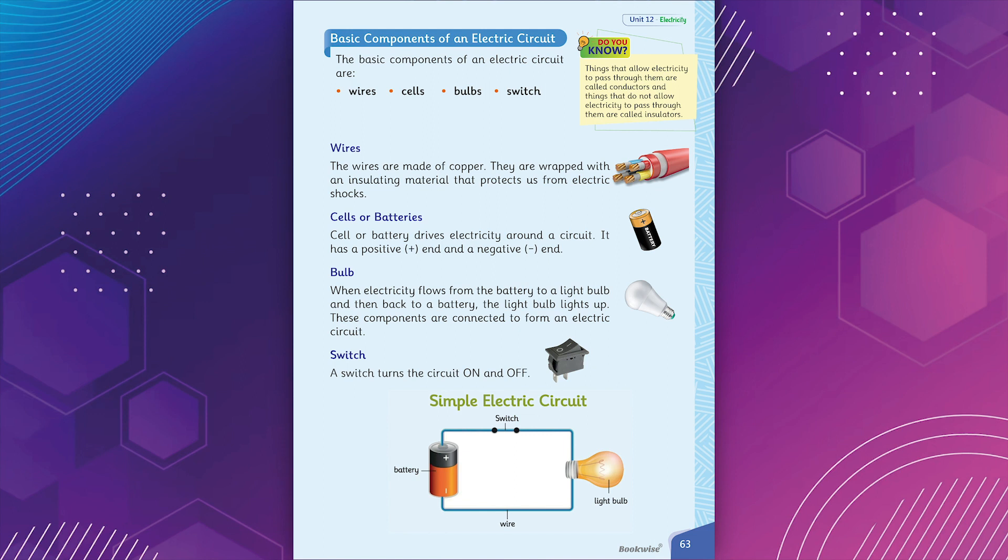Bulb. When electricity flows from the battery to a light bulb and then back to the battery, the light bulb lights up. These components are connected to form an electric circuit.